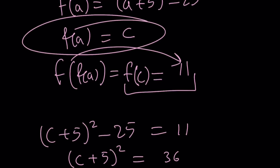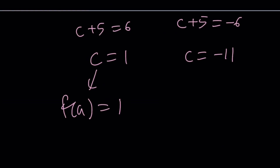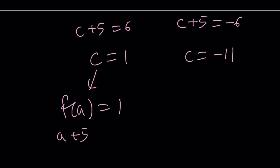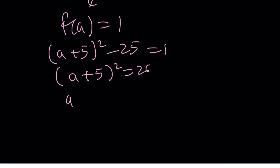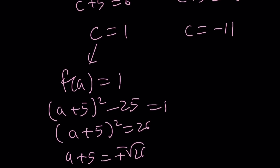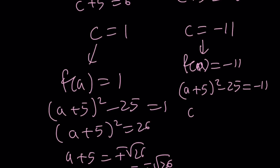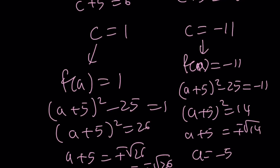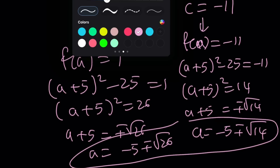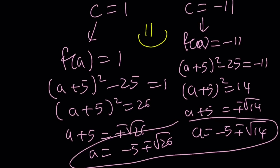Now remember c is f of a. So f of a equals 1, and using the vertex form a plus 5 squared minus 25 equals 1. Add 25 to both sides and we get a plus 5 equals plus or minus the square root of 26, so a equals negative 5 plus or minus the square root of 26. Then for f of a equals negative 11: a plus 5 squared minus 25 equals negative 11, so a plus 5 squared equals 14, giving a equals negative 5 plus or minus the square root of 14. Those are all the a values. Thank you for watching — please comment, like, and subscribe. See you next time!